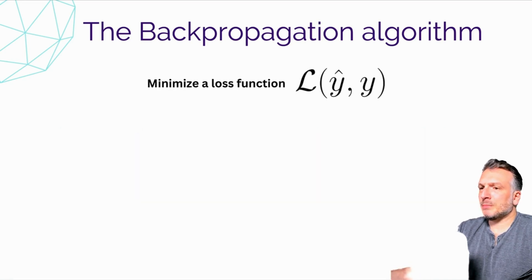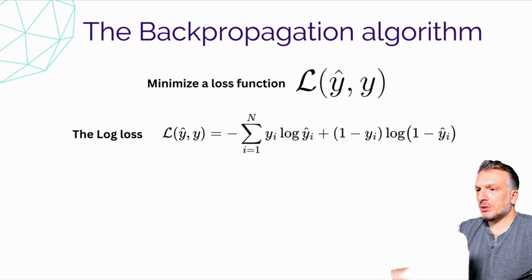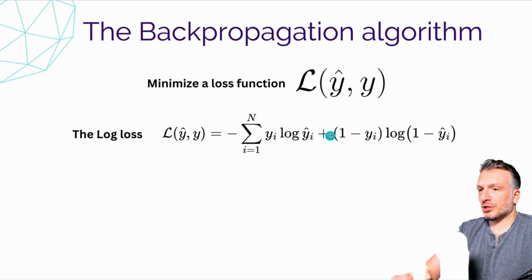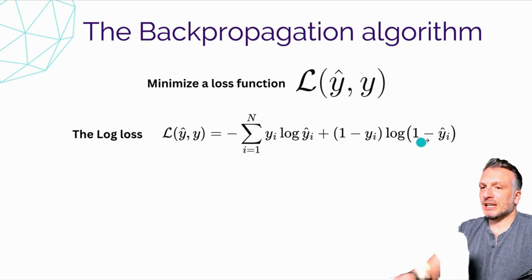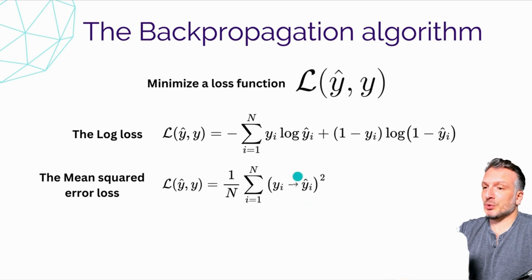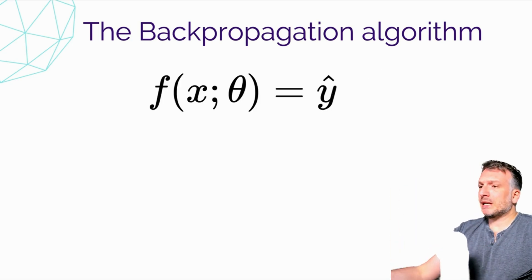Let's look at a couple of loss function examples. The first is log loss, used typically for binary classification — it compares predictions with targets through a cross-entropy function: the target times the log of the predictions, for both positive and negative samples. Another loss function is mean squared error, which measures the squared distance between the predictions and the target. We want to minimize the distance between those two variables.